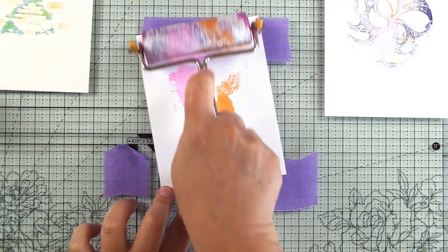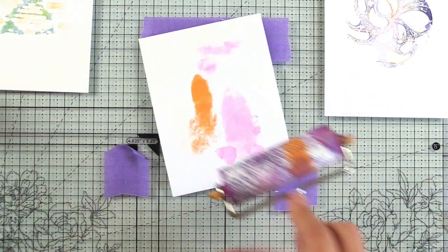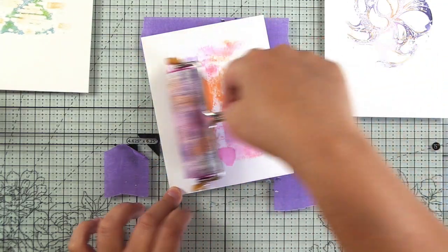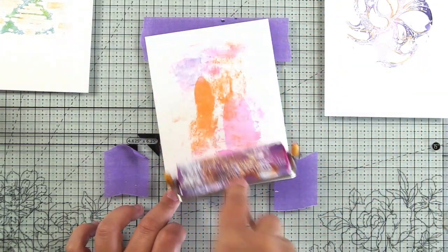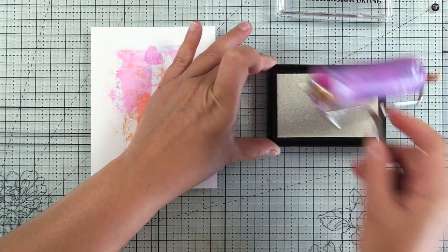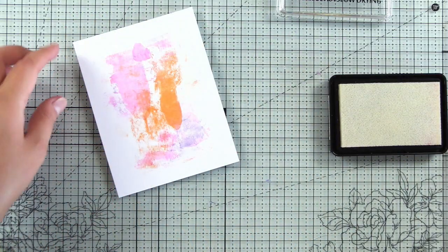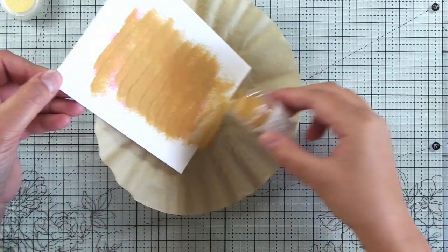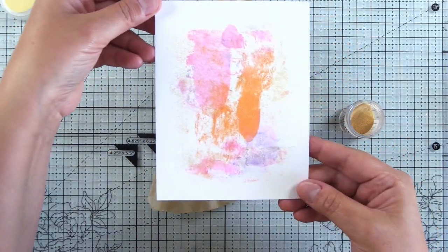And then I have all this leftover pink on my brayer and I was about to clean it, but I decided, let me just go ahead and roll this off onto another card panel. This ended up being one of my favorite backgrounds. So you can see, I'm just rolling that over it. Then I'll go ahead and clean the brayer with some baby wipes. And then I'm going to roll the brayer onto the wow embossing pad. So there's so many different ways that you can add embossing powders to your cards. So we've used the brayer, we put it directly onto the wet acrylic paint, we use the wow embossing pen, the mixed media tool, we spritzed it with water to emboss.